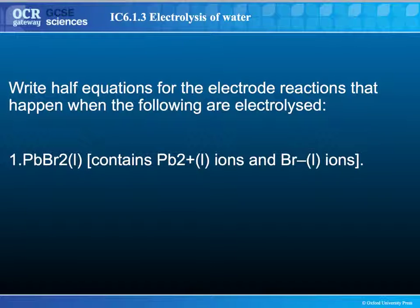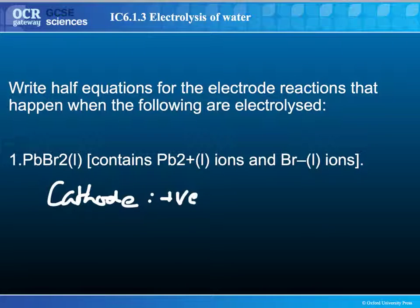Lead bromide, PbBr2, contains lead two plus ions and bromine ions as well. I would like you to try and write half-equations for what's going on at the cathode, remembering at the cathode you have positive ions because it's negative, and the anode, remembering that it's negative ions because it's positive.